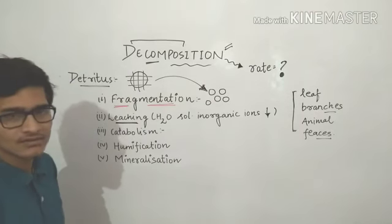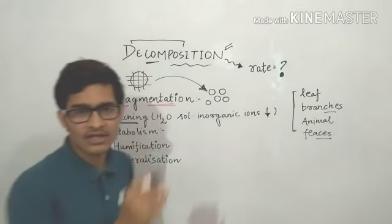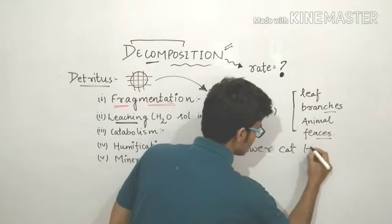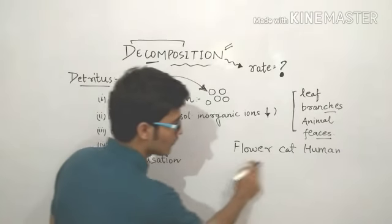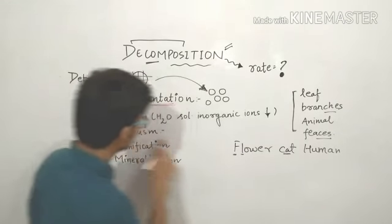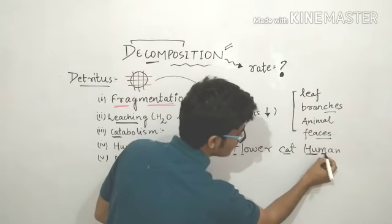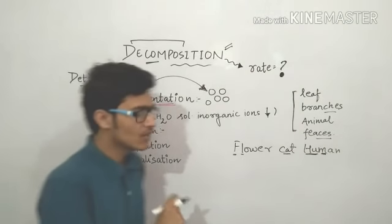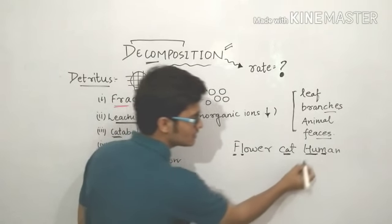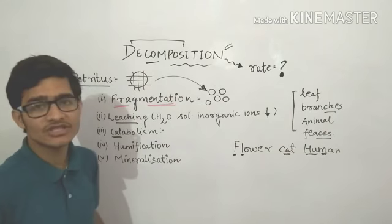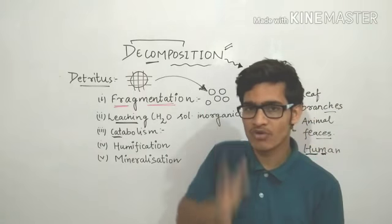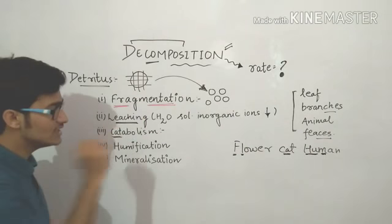To remember all five phases in sequence, here is a mnemonic: Flower Cat Human. F stands for fragmentation, L stands for leaching, C stands for catabolism, and Human stands for humification and mineralization. So Flower Cat Human — fragmentation, leaching, catabolism, humification, and mineralization. These are the five major phases of decomposition. Fragmentation is when large organic detritus is broken down into small pieces.